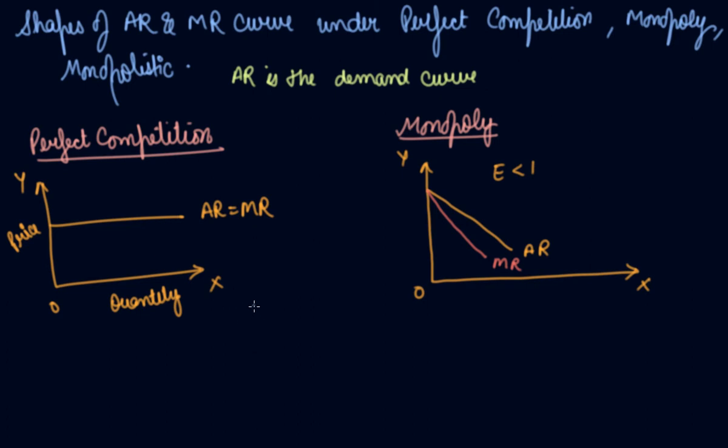And monopolistic competition. A little change in the price will have a huge change in your quantity demanded. So your demand is more elastic in this case.